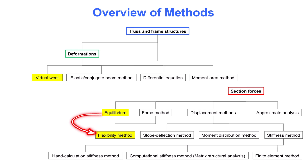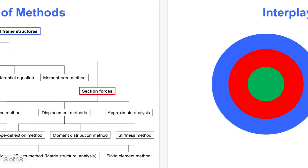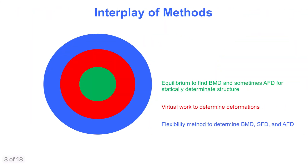The flexibility method introduces cuts or releases in the structure to make it determinate, followed by the use of equilibrium to analyze that determinate structure. The unit virtual load method is also employed in order to determine the deformations required to glue the cut structure back to its original configuration. The next slide illustrates this interplay of equilibrium, virtual work, and the flexibility method.